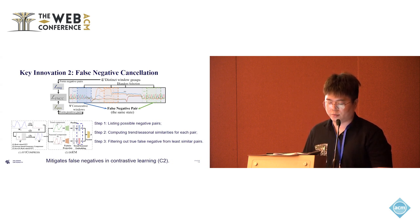To address this, we introduce a false negative cancellation method, which uses a similarity-based negative sampling scheme. This scheme evaluates the seasonal and trend similarities between two window groups and filters out the true negative pairs. Specifically, we list all the possible negative pairs. We compute the trend and seasonal similarity between their embeddings. Finally, we filter out the false negatives from the least similar pairs.